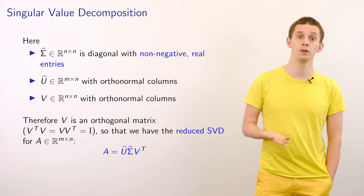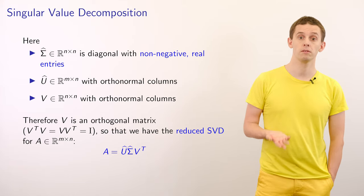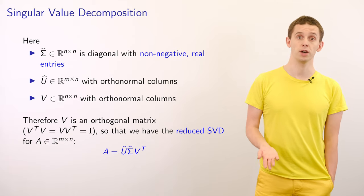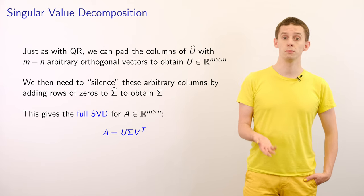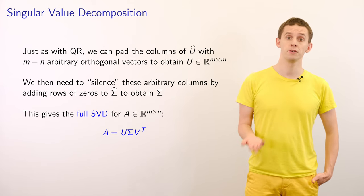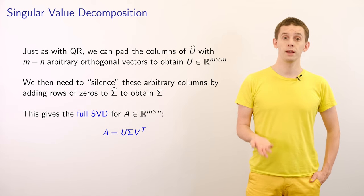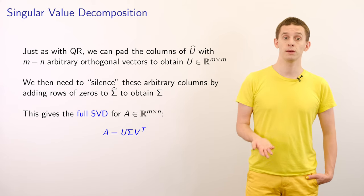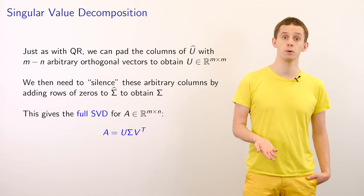We therefore end up with a reduced singular value decomposition, abbreviated to reduced SVD. For any matrix A of size m by n, we have that A equals U-hat times Sigma-hat times V-transpose. We'll notice the similarity to the way the QR decomposition was constructed. Just as with QR, we can pad the columns of U-hat with m minus n arbitrary orthogonal columns to obtain a full orthogonal matrix U, and add rows of zeros to Sigma-hat to obtain a full matrix Sigma, giving us the full SVD: A equals U times Sigma times V-transpose.